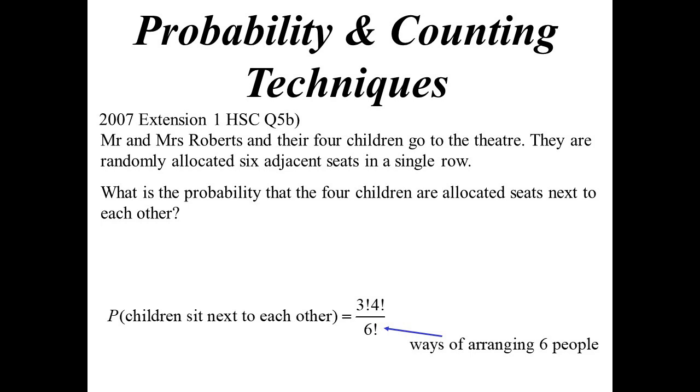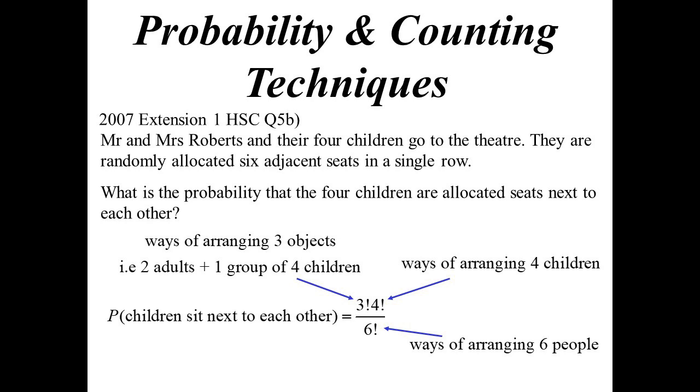So with no restrictions, it's simply we want to arrange six people, so it's a permutation, the order is important. Arranging all of them, six factorial. The top of the fraction, now we look after the restrictions. The four children have to go next to each other. That is the four factorial in this answer, the number of ways we could arrange those four children. But once they've been arranged, they're now one object, like one person. So we now have to arrange three objects, the two adults plus that group, three factorial. So three factorial and four factorial, six factorial, which all tidies up to be one in five.